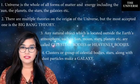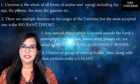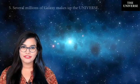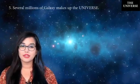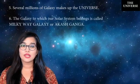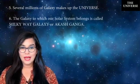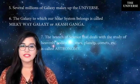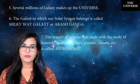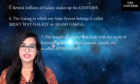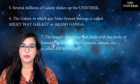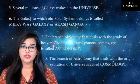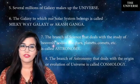Fourth, clusters or groups of celestial bodies — stars along with dust particles — make a galaxy. Fifth, several millions of galaxies make up the universe. Sixth, the galaxy to which our solar system belongs is called the Milky Way galaxy or Akash Ganga. Seventh, the branch of science that deals with the study of heavenly bodies is called astronomy, whereas the branch that deals with the origin or evolution of the universe is called cosmology. That's all for today — we'll see you in the next class.